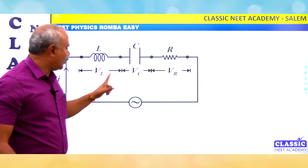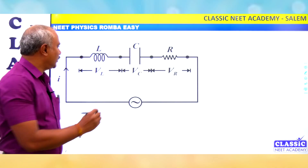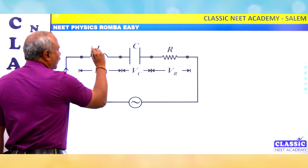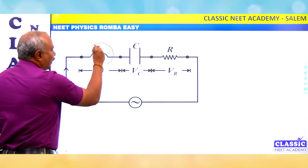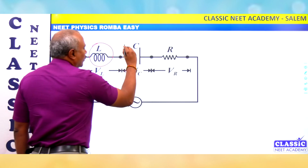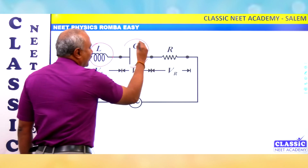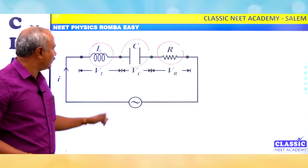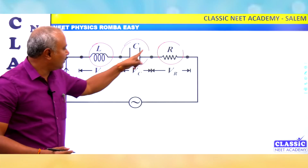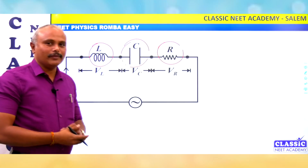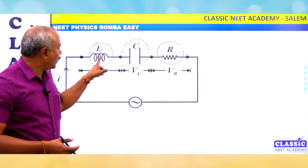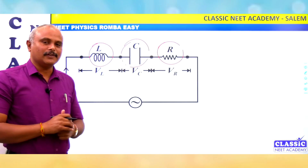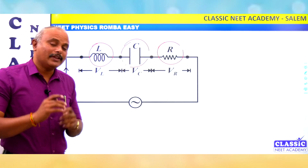What do we have to do with LCR circuit? You see here: an inductor, a capacitor, a resistor. In this case, the LCR circuit has an inductor, a capacitor, a resistor, and there is resistance.